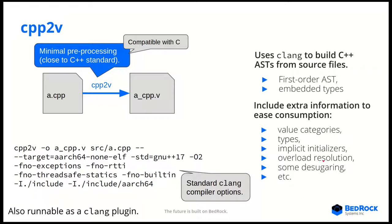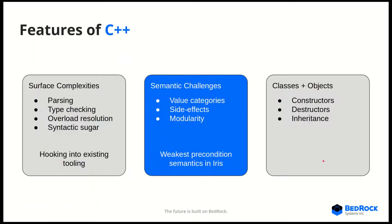We also get to include extra information that Clang has already resolved, including things like value categories, types, implicit initializers, and overload resolution, which is very important later down the line.